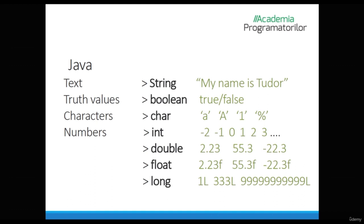Truth values are boolean and there can be only two values: true or false. Our letters will be of type character, and these — unlike strings — must always be enclosed in single quotes, not double quotes. If I say lowercase A or uppercase A, these are characters. One can also be registered by our compiler as a character. This also applies to special signs. Numbers in Java can be of several types.